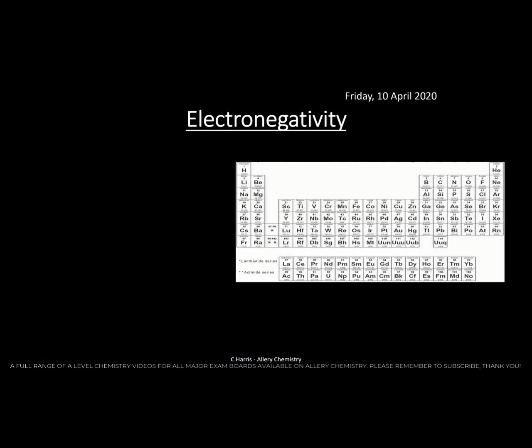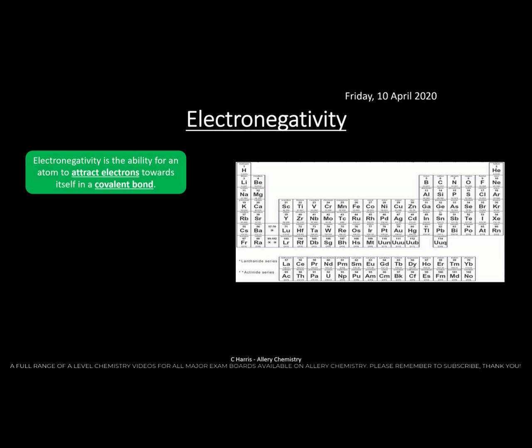Within a molecule, sometimes dipoles or polarity can be induced by being near another atom. Some molecules actually have a permanent dipole. To understand what a permanent dipole is, we first need to look at something called electronegativity — the ability of an atom to attract electrons towards itself in a covalent bond. An electronegative atom will pull electrons towards itself in that bond.